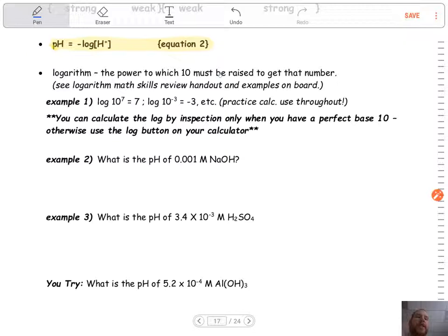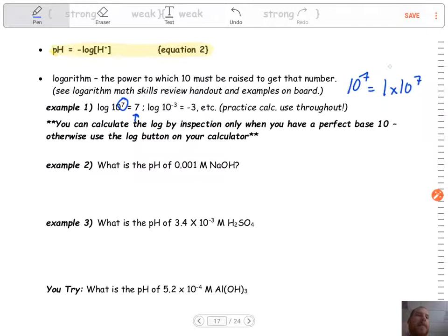So logarithm is the power to which 10 must be raised to get that number. I have a math skills review handout if you want it. But again, you don't need to get into the details. We can calculate it just by using our calculator. But one thing I want to show you is if you have a perfect base 10, meaning it's like log 10^7, a whole number up there, the log of that is just going to be that power. So log 10^7 is just seven. Log 10^-3 is just negative three. When we write it out, it's 1×10^7. So that's what I mean by that perfect base.